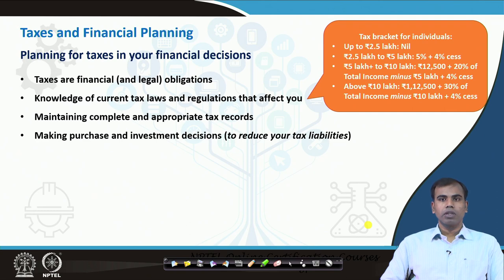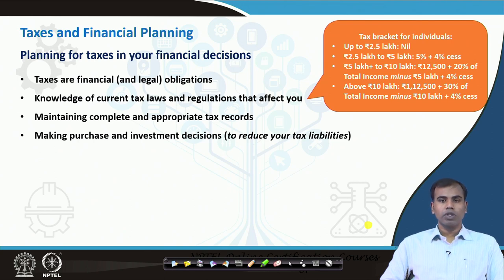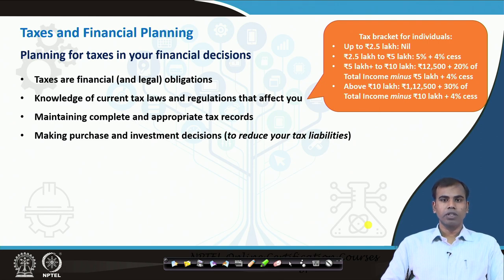If your income crosses 10 lakh rupees, you are supposed to pay a base tax of 1 lakh 12,500 plus 30 percent of total income minus 10 lakh, plus 4 percent cess. For example, if your income is 15 lakh, your tax liability is 1 lakh 12,500 plus 30 percent of 5 lakh, plus 4 percent cess. These are the prevailing rules for taxes with respect to individuals. The government has also given additional provisions for senior citizens and women. Since this course does not cover taxes as a major component, we will focus on how taxes can influence our financial planning and help us make better financial decisions.